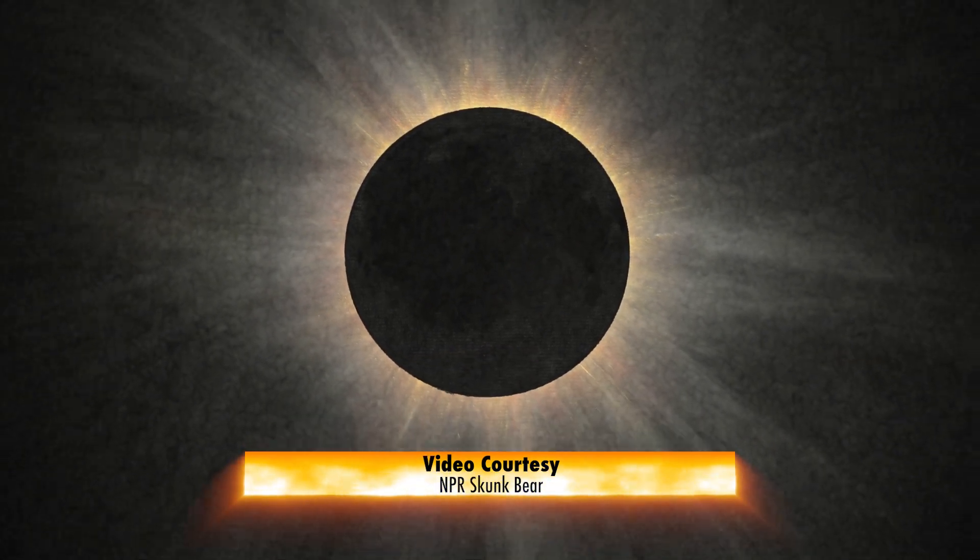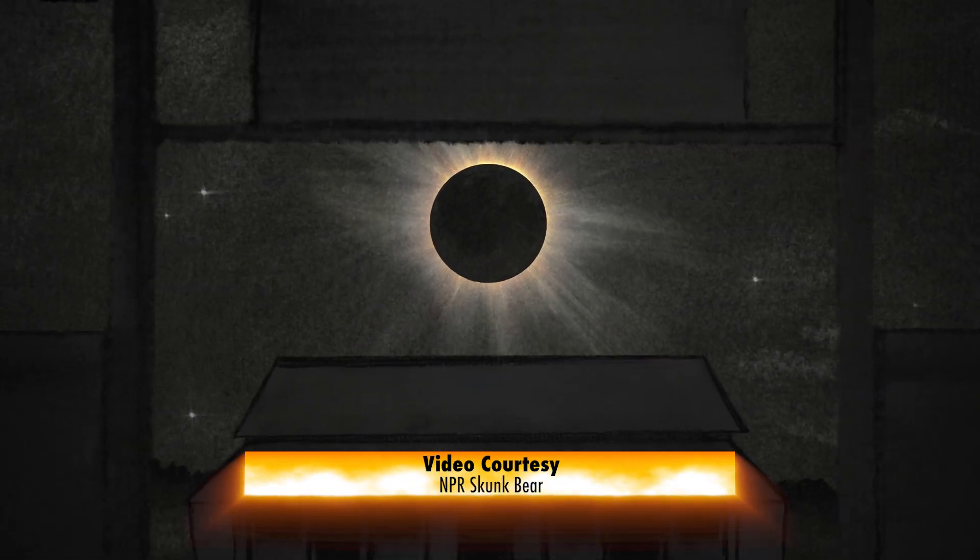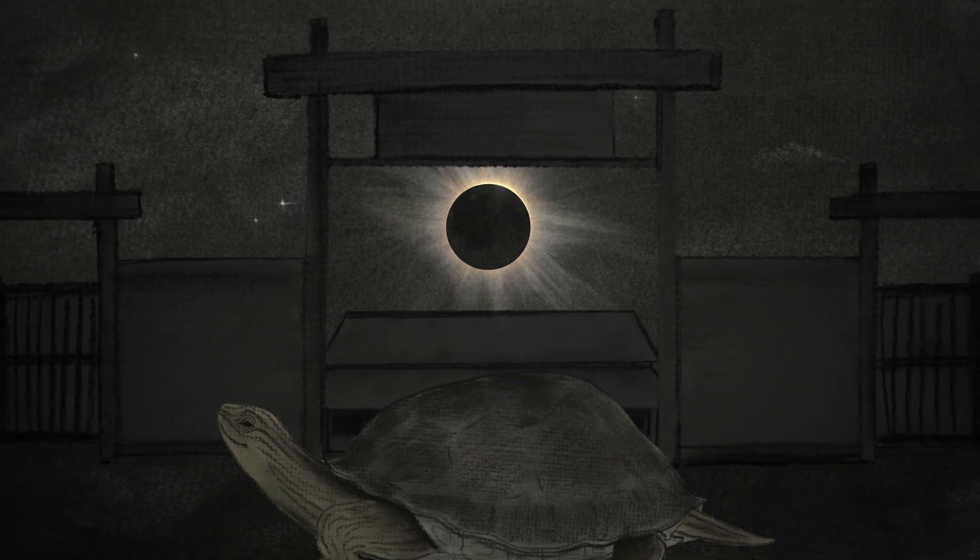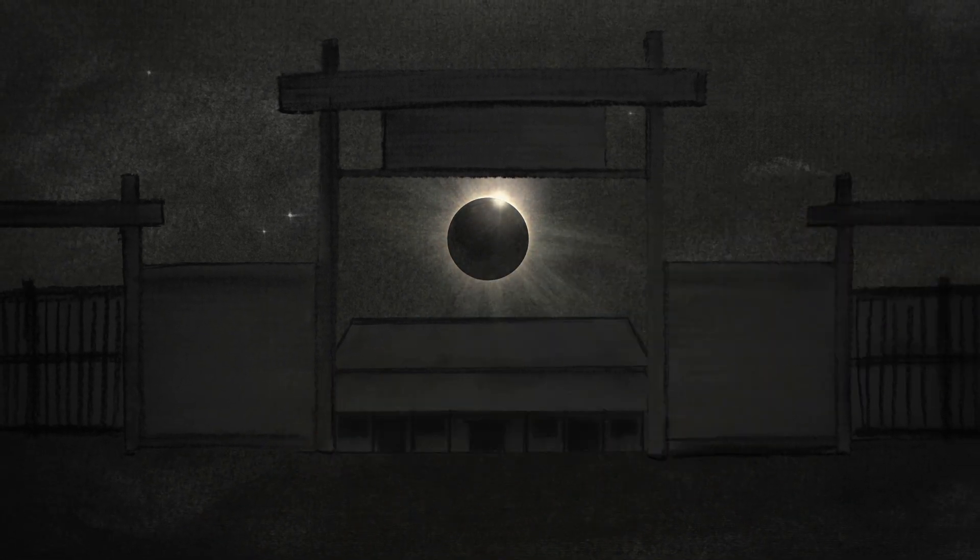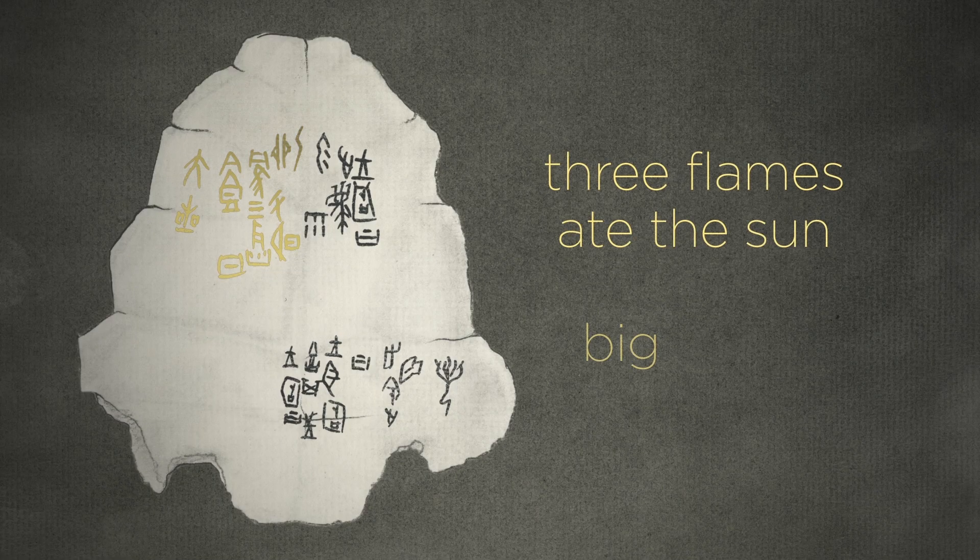The oldest surviving record of an eclipse comes from Yin, an ancient capital city in China. It was carved on a tortoise shell. Three flames ate the sun, and big stars were seen.